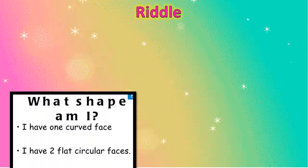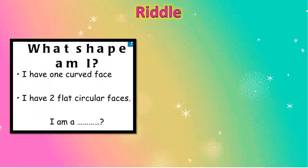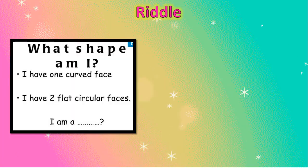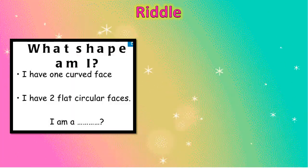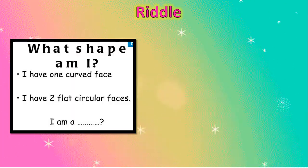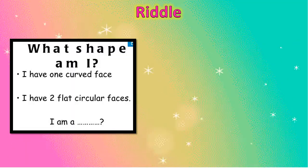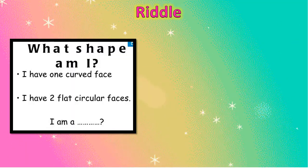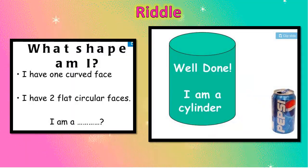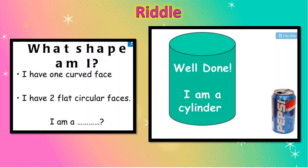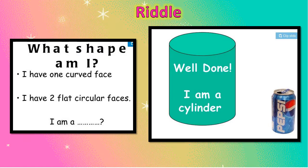It is your next riddle. What shape am I? I have 1 curved face and I have 2 flat circular faces. Dear student, guess the shape. Well done, I am a cylinder! And you know cylinders look like a tin can.